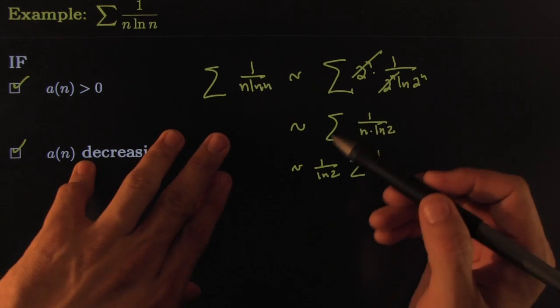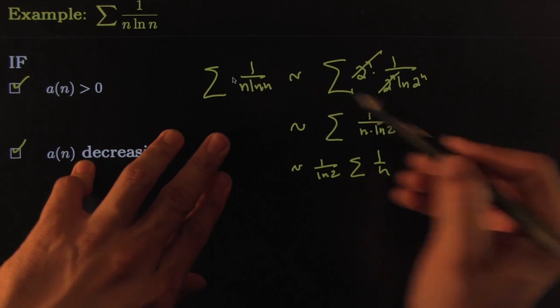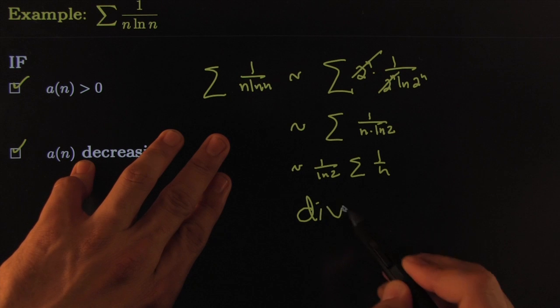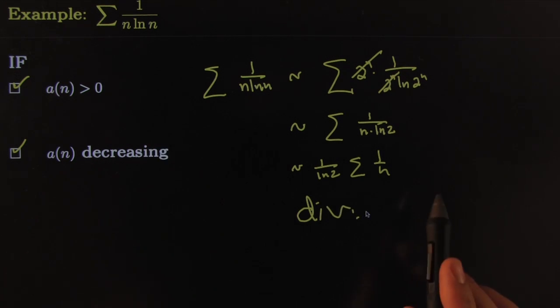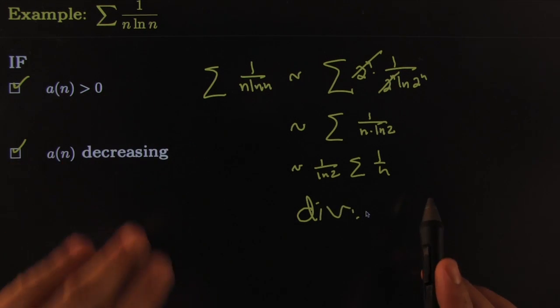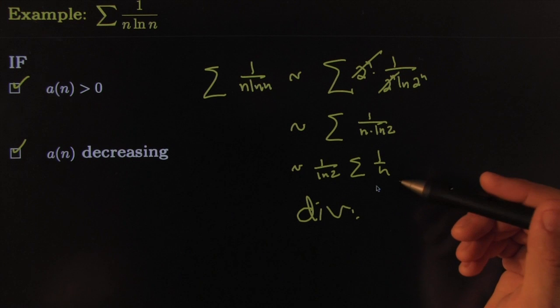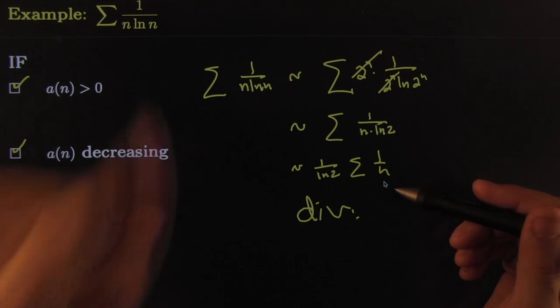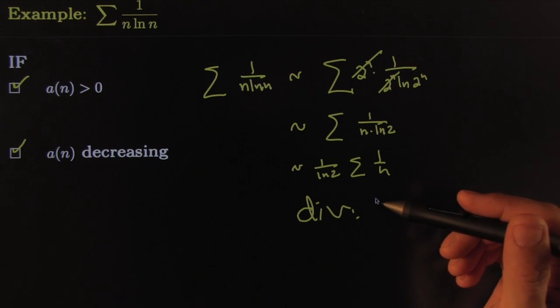This tells you in an amazingly elegant way that the original series behaves just like the harmonic series, so clearly they diverge by Cauchy's condensation test. Powerful stuff! Wait, there's more. Check out the next example - see you guys here for the next one.